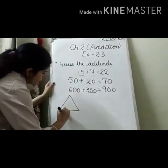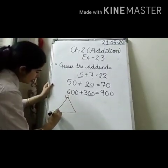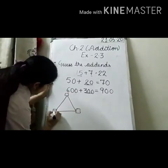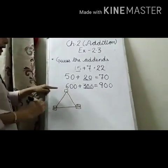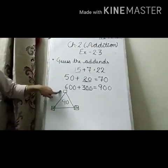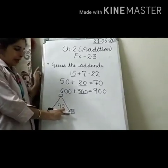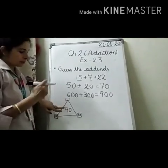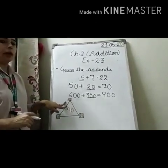We can also do it another way. There is a triangle with numbers on its corners — 20, 30, and a missing box — and the sum is given in the center. 20 plus 30 equals 50, and the sum is 90. What must be added to 50 to make 90? The missing addend will be 40.